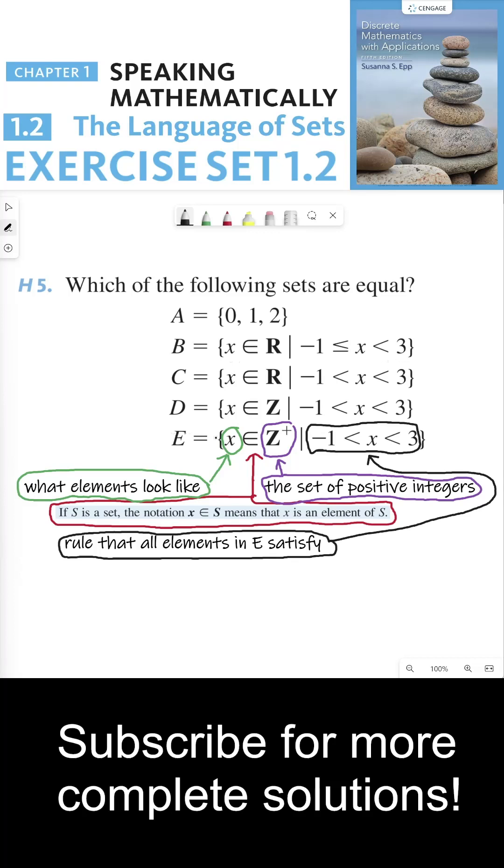So I took set E and deconstructed each aspect of set builder notation and explained what these things mean. X represents what elements look like. In this case, it's just a lowercase letter. Sometimes you might see a lowercase letter with an arrow on top of it, which would represent a vector, or you might have a matrix here, or capital letters, which would represent sets themselves. But the format of this variable gives an idea of what the elements in your set E look like.